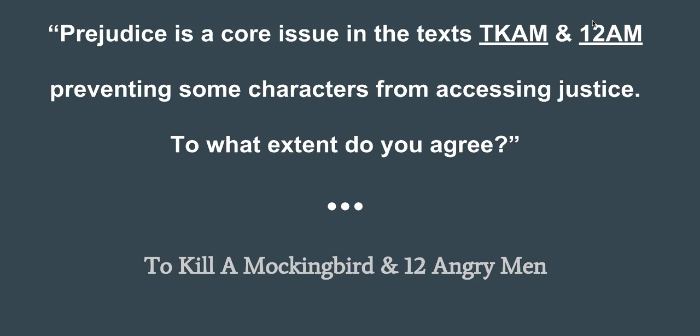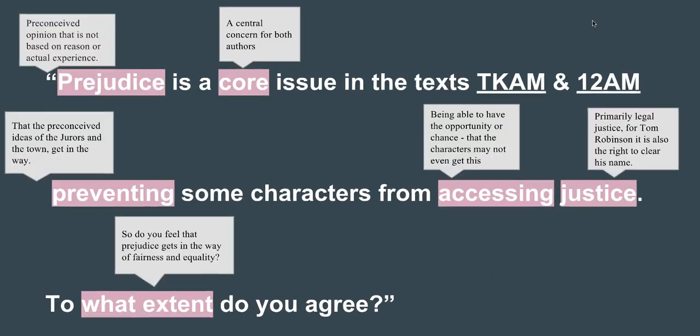Prejudice is a core issue in the texts To Kill a Mockingbird and 12 Angry Men, preventing some characters from accessing justice. To what extent do you agree? We've talked a lot about prejudice with our weekly readings and about justice. Here we're saying that prejudice — preconceived ideas that exist in the society of Maycomb in To Kill a Mockingbird, and preconceived ideas that the jurors bring into the jury room in 12 Angry Men — prevents some characters from accessing justice. When we say some characters, we're thinking about the accused in 12 Angry Men and Tom Robinson in To Kill a Mockingbird.